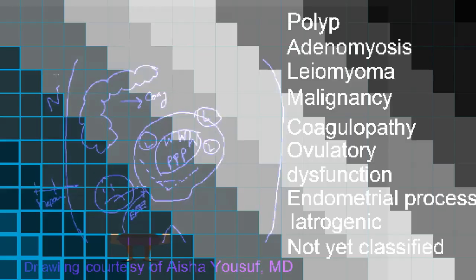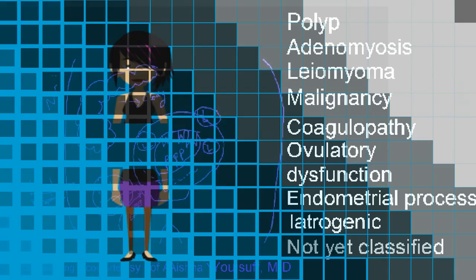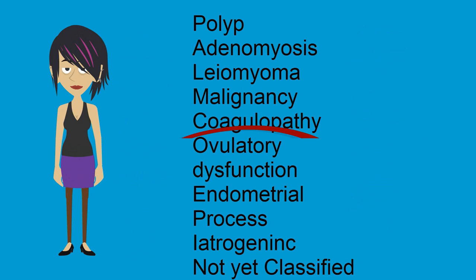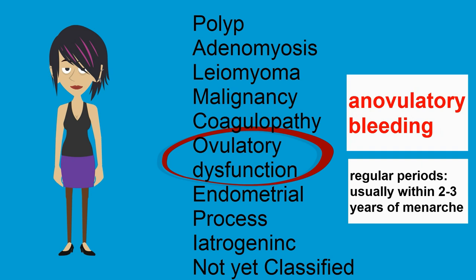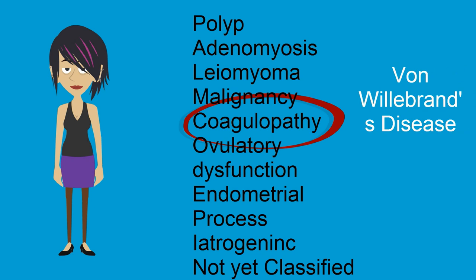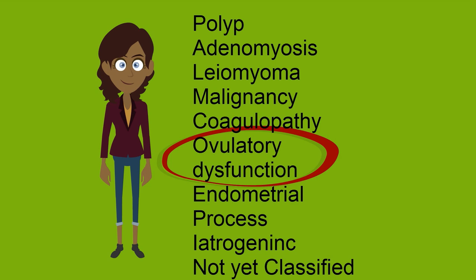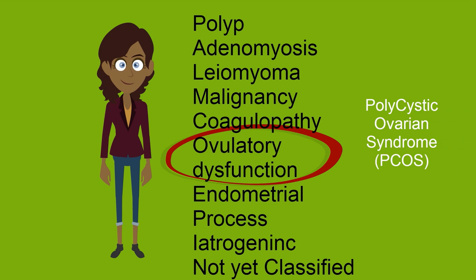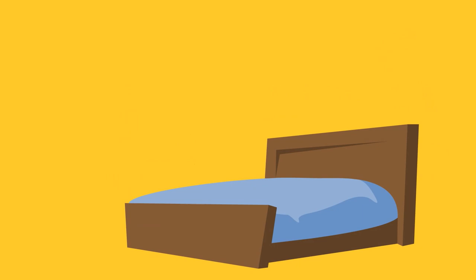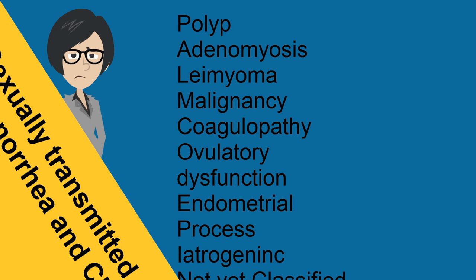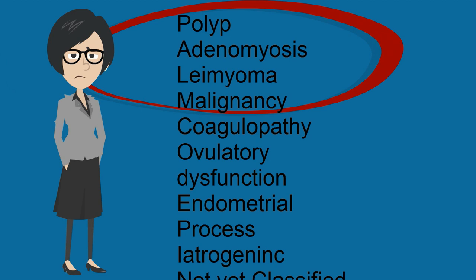The usual causes of AUB vary over a woman's lifetime. For adolescent women, the most common cause is ovulatory dysfunction — specifically anovulatory bleeding from immaturity of the HPO axis. Regular periods are usually established within two to three years of menarche. If an adolescent presents with heavy periods, it's important to consider coagulation disorders such as von Willebrand's disease. For women of reproductive age, ovulatory dysfunction remains common, with the most common cause being polycystic ovarian syndrome (PCOS), which affects 6% of all women of reproductive age. Pregnancy and related complications are also a common cause, so don't forget to check a pregnancy test. Sexually transmitted diseases such as gonorrhea and chlamydia can also cause AUB. Perimenopausal women have increased incidence of anatomic sources such as polyps, adenomyosis, leiomyomas, or malignancy, and ovulatory dysfunction secondary to declining ovarian function.